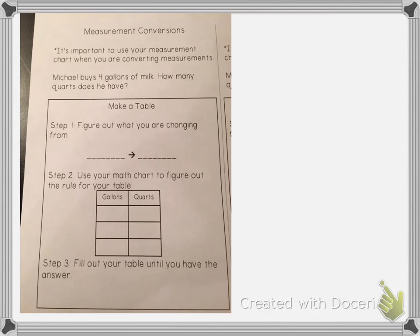In this problem, Michael buys four gallons of milk and the question asks how many quarts does he have.